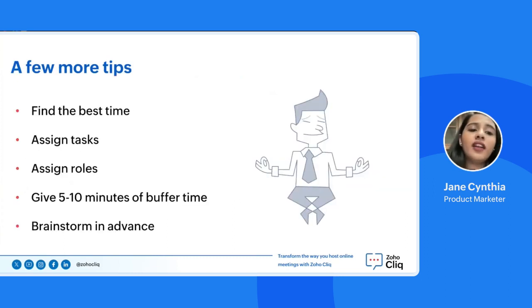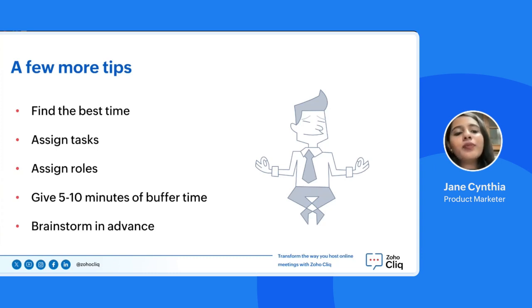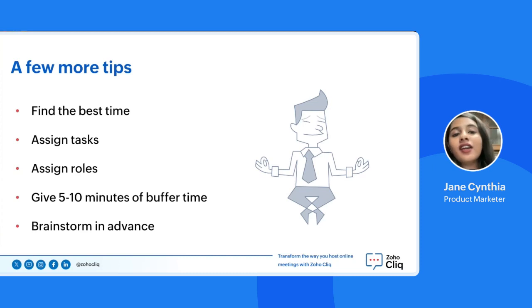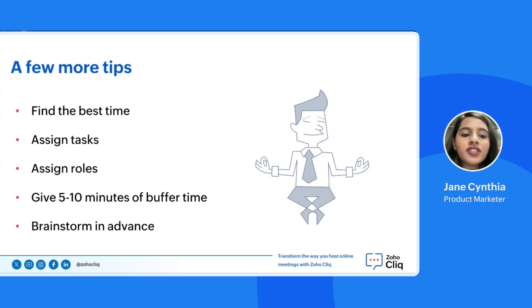Number one: video use — the usage of turning on webcams. You can encourage video use but be understanding if that's not always possible. When team members have the video on for each meeting, they can often feel like they are performing, leading to quicker burnout. Giving co-workers the option can mitigate some of that stress.